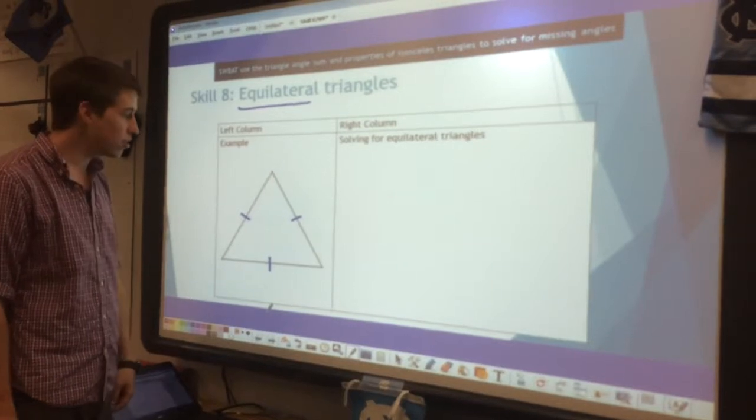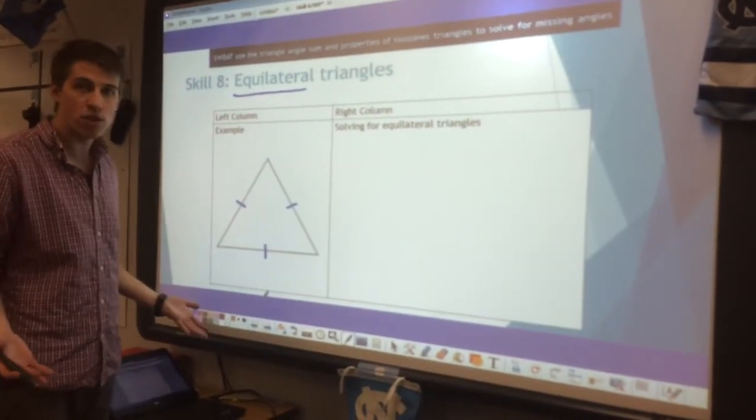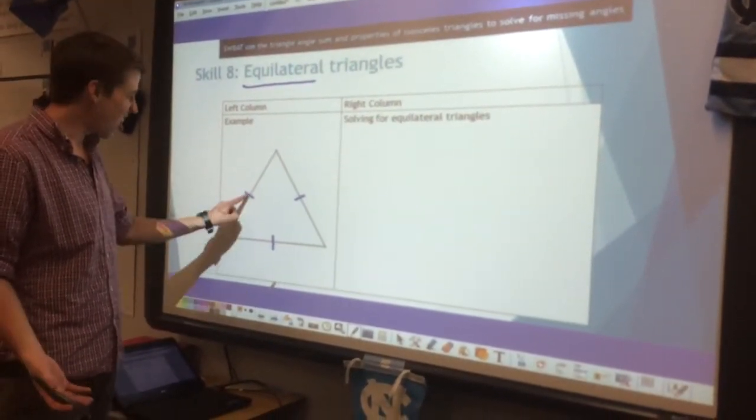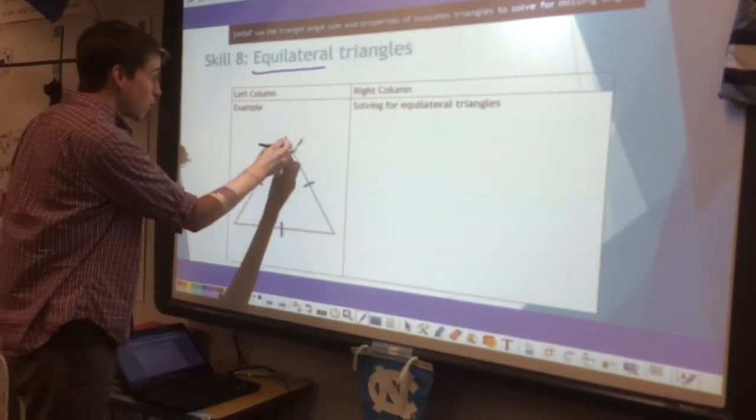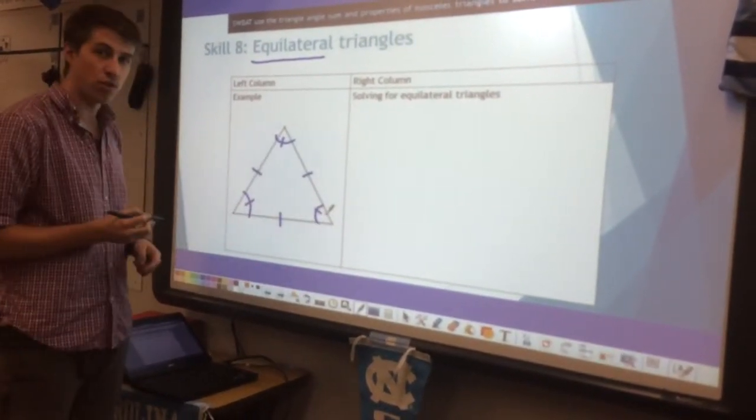So just like with the isosceles triangle, we can mark up which angles are congruent. But in this case, all three sides are congruent, which means all three angles are also congruent.